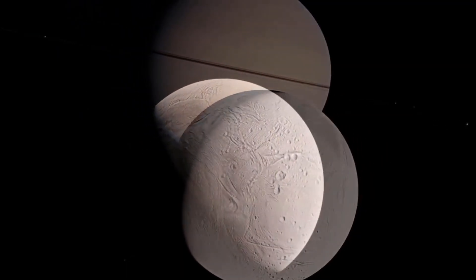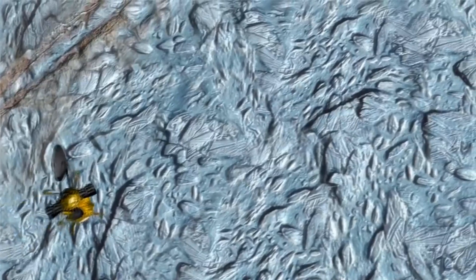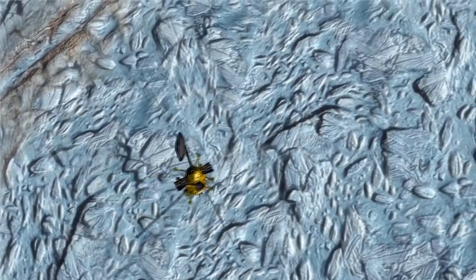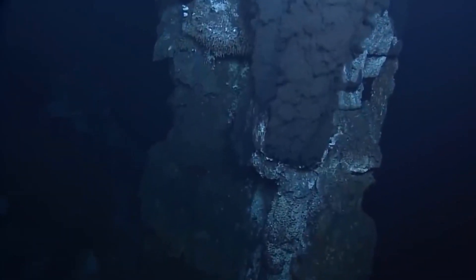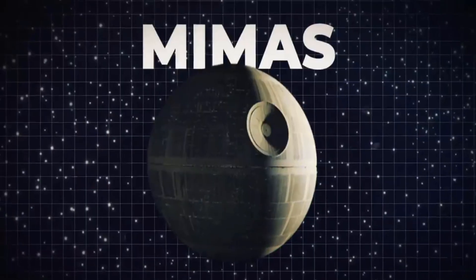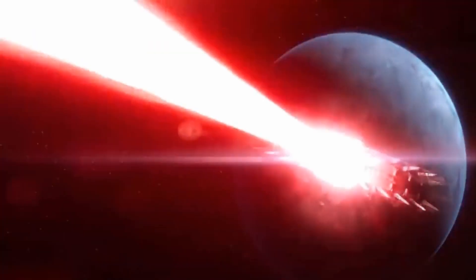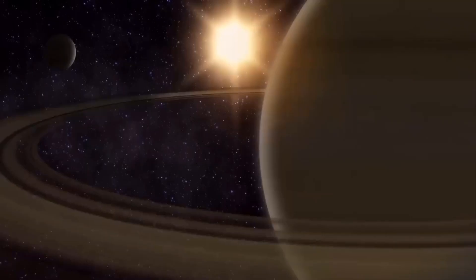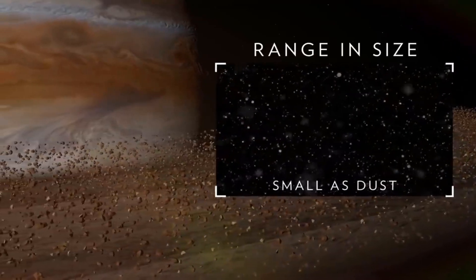From these samples, scientists have determined that Enceladus has most of the chemical ingredients needed for life and likely has hydrothermal vents spewing out hot, mineral-rich water into its ocean. About as wide as Arizona, Enceladus also has the whitest, most reflective surface in the solar system.